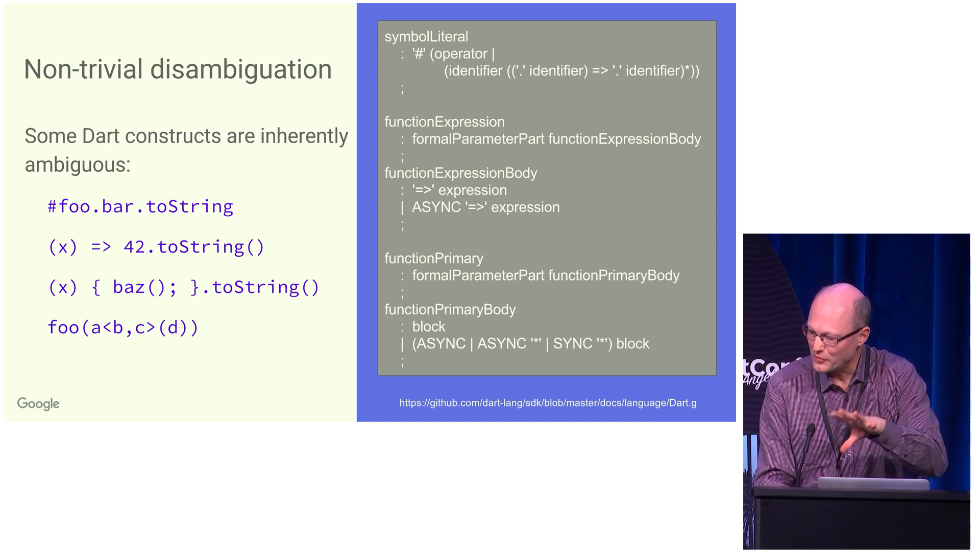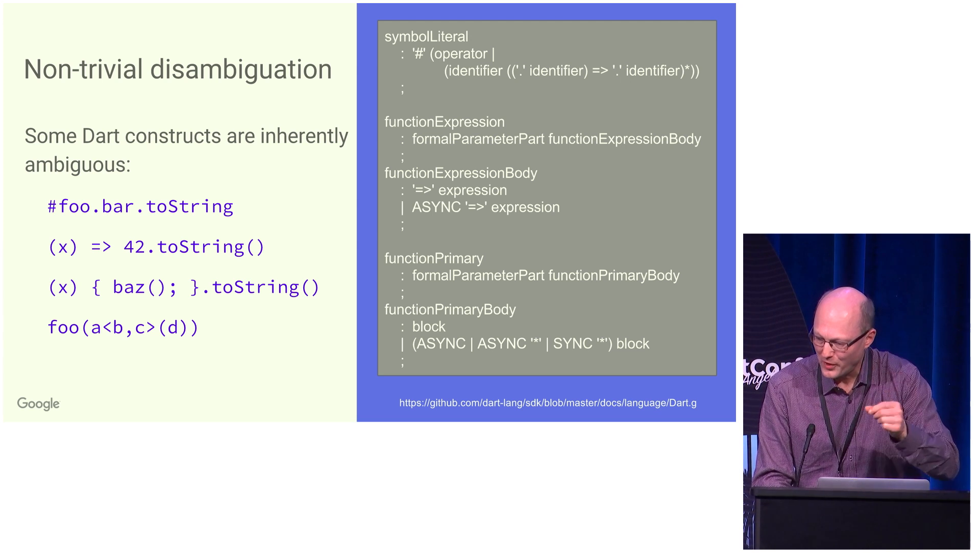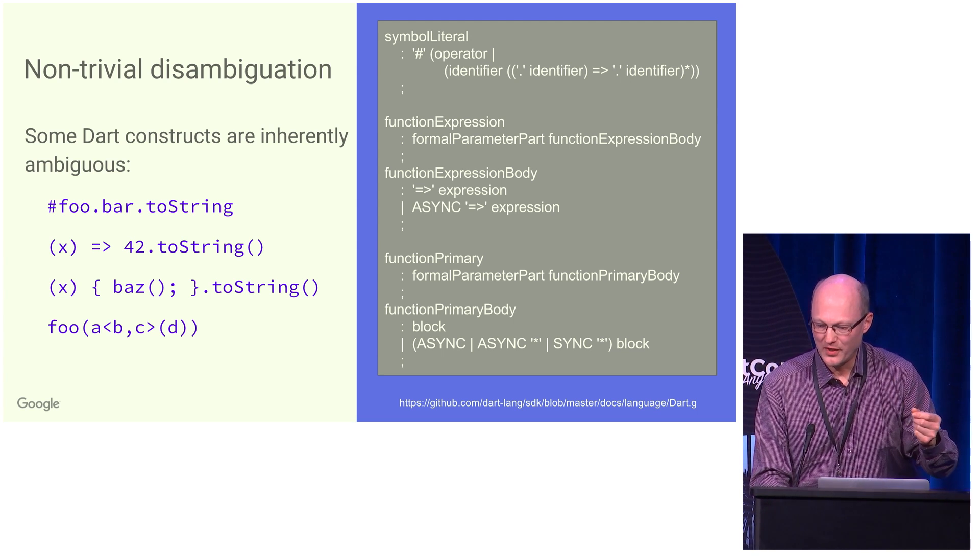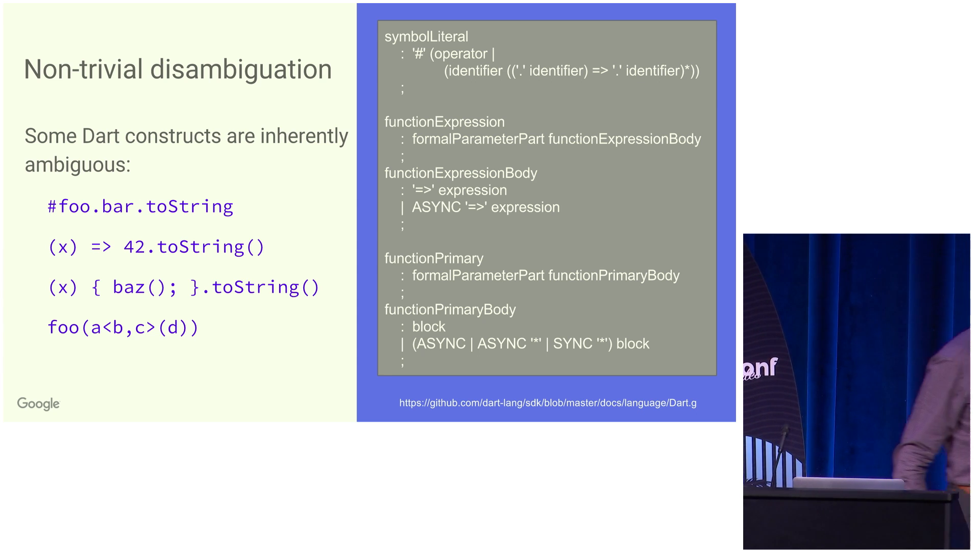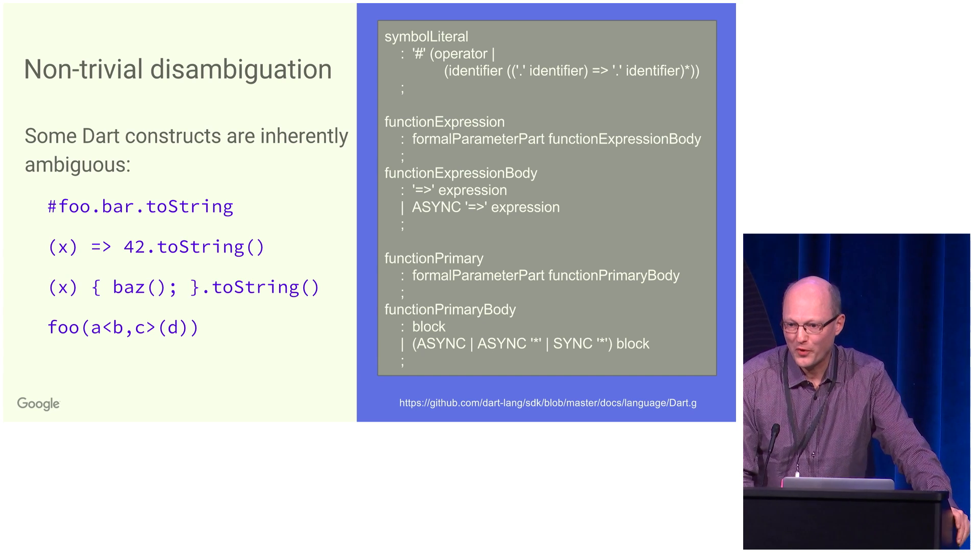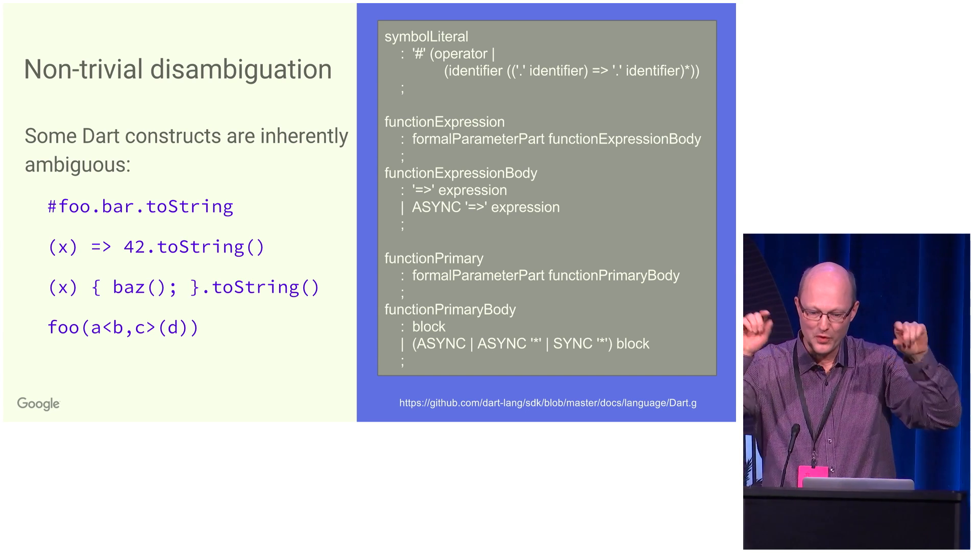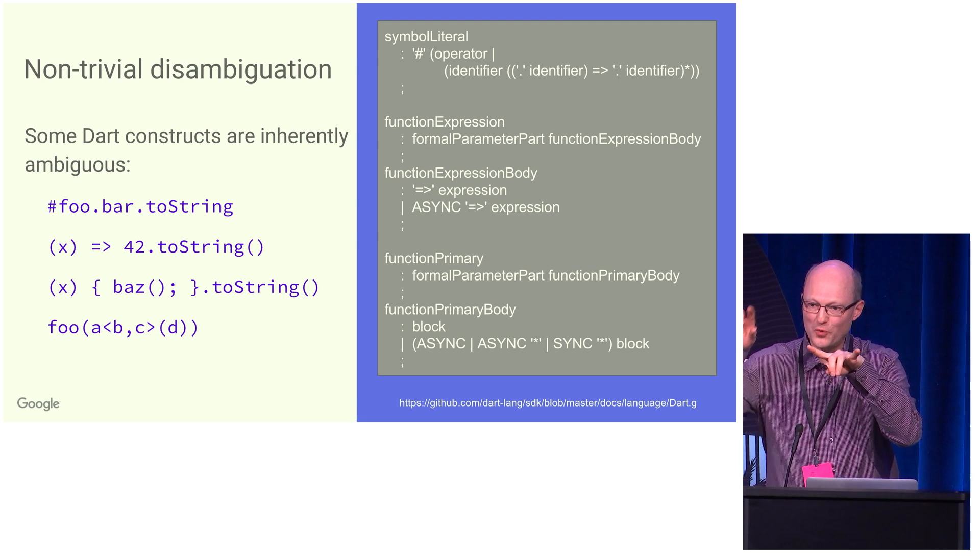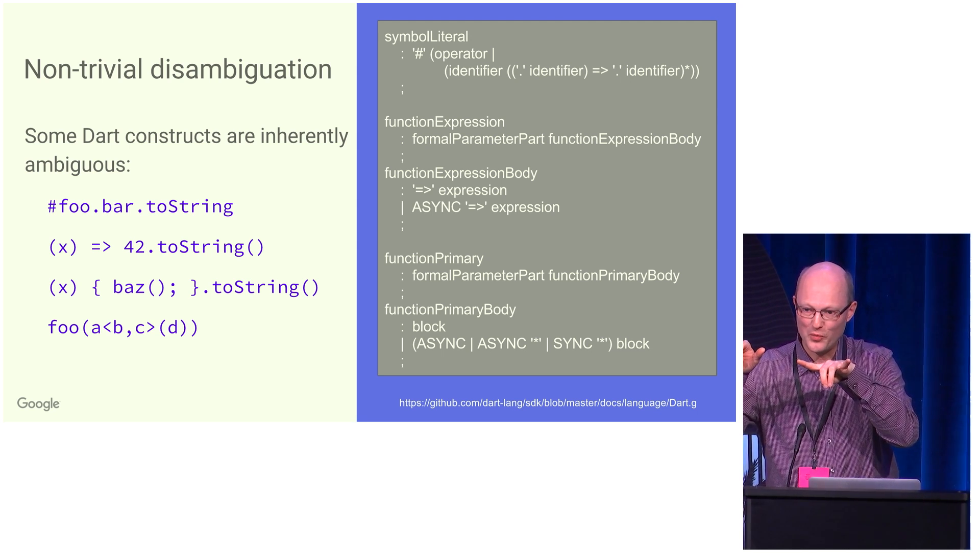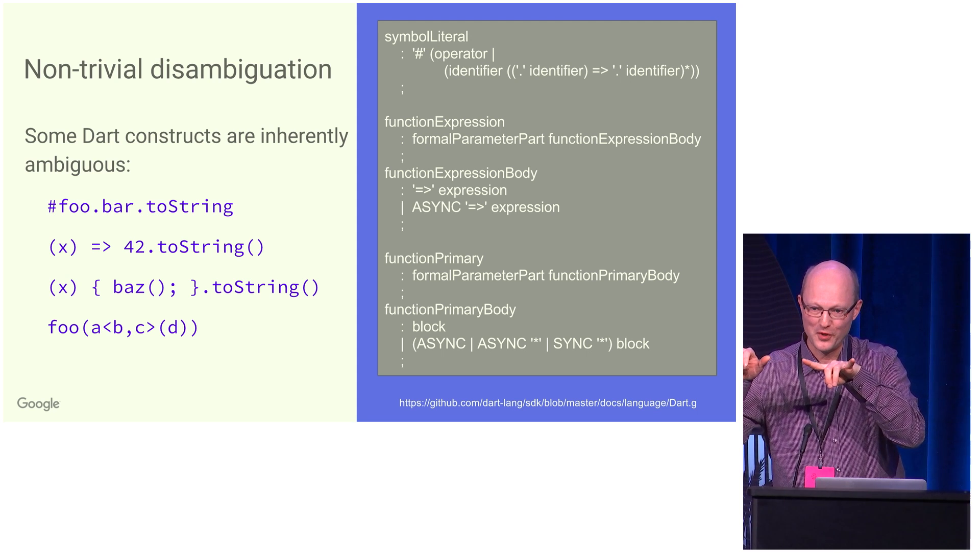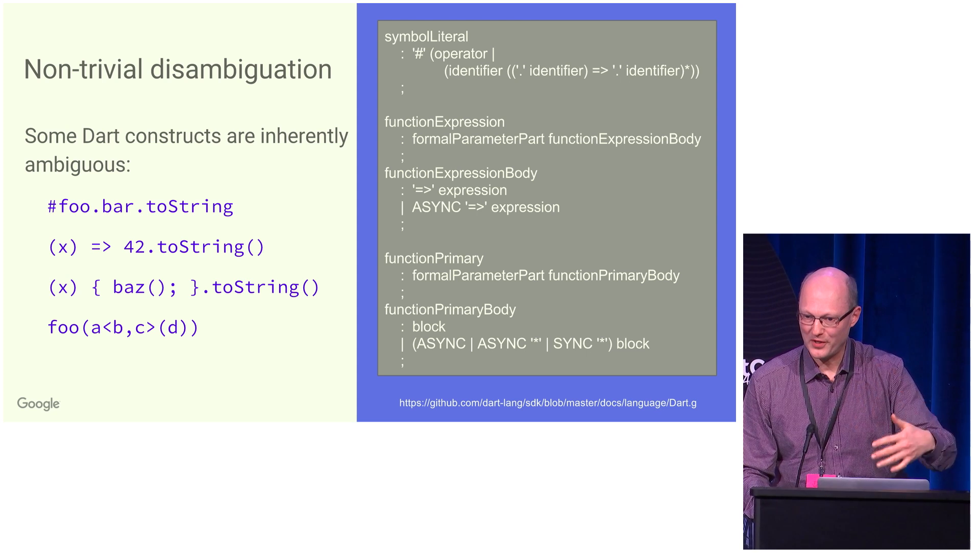This is something handled in the specification by saying that you continue as far as you can. The second example is the function expression, and the point is that you could actually have something like this expression, x to 42.toString. You could parse that as the function, and then tear off the toString method from the function itself, which is possible but never useful. So we adjusted the grammar to make sure it's never passed like that.